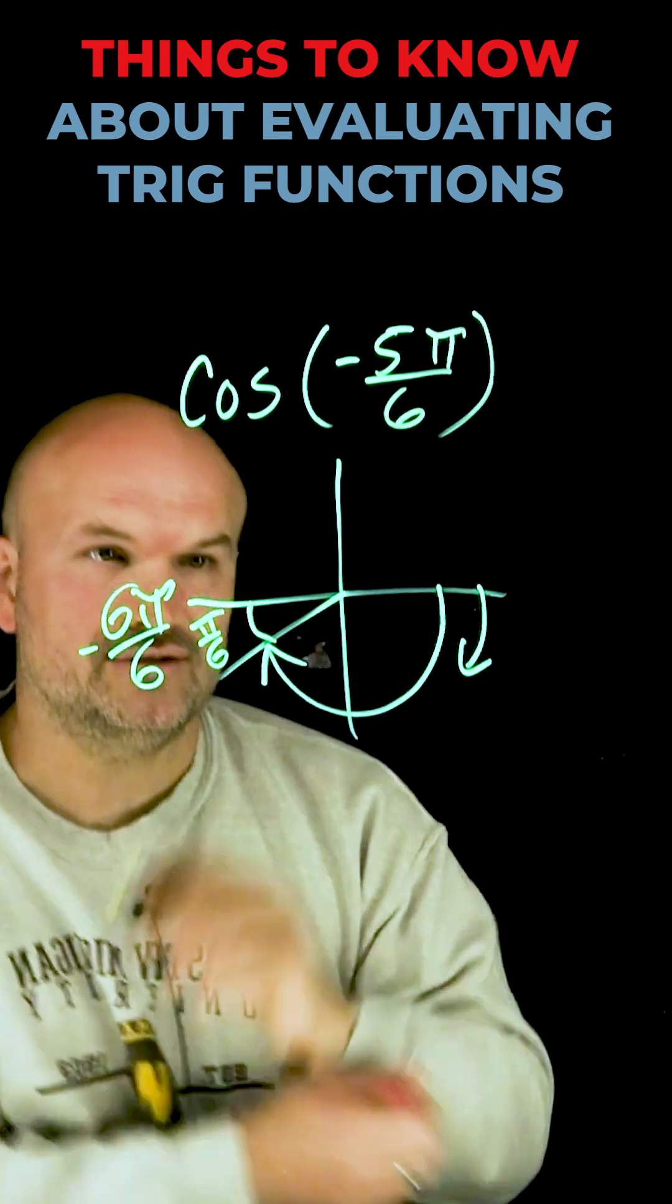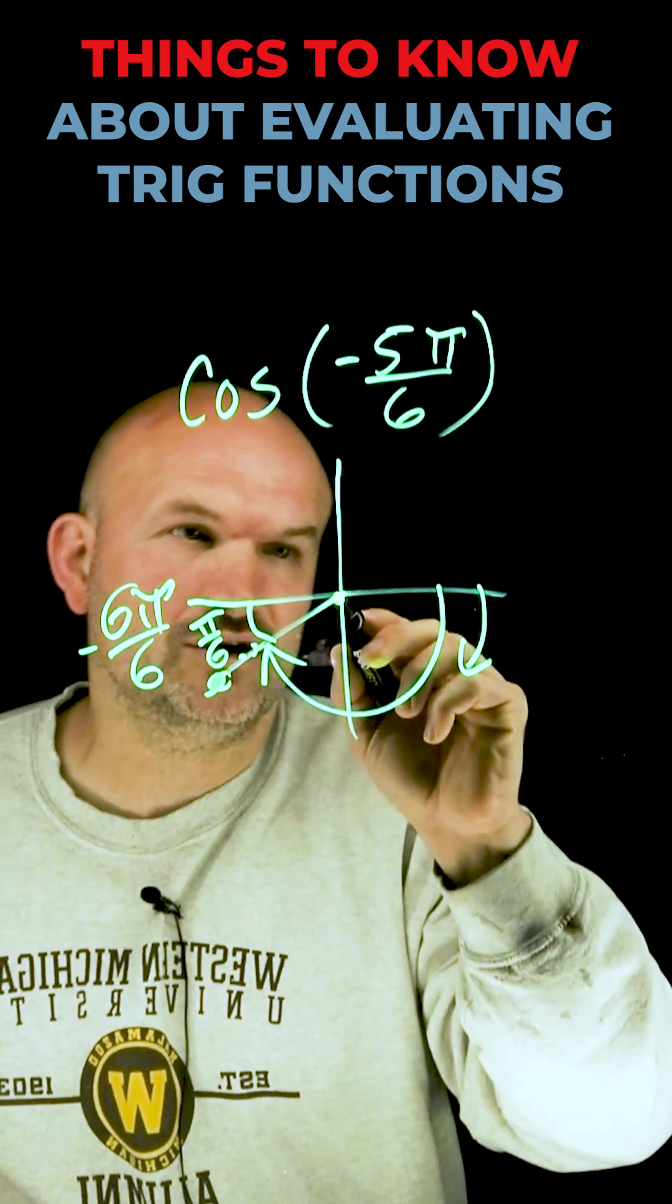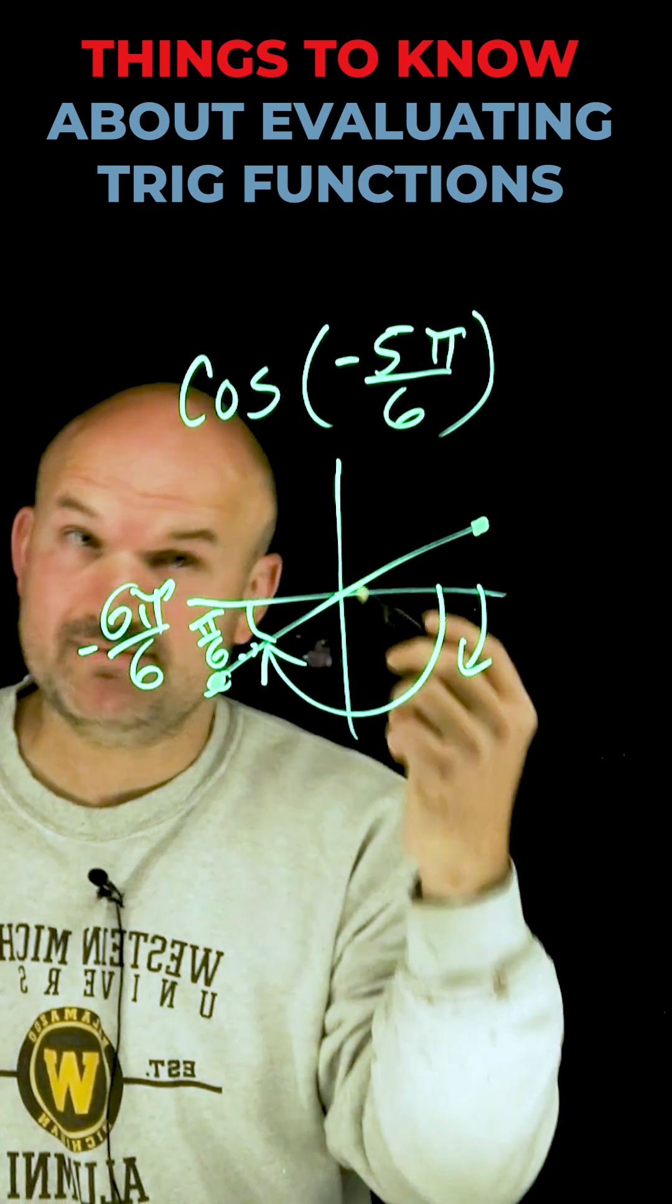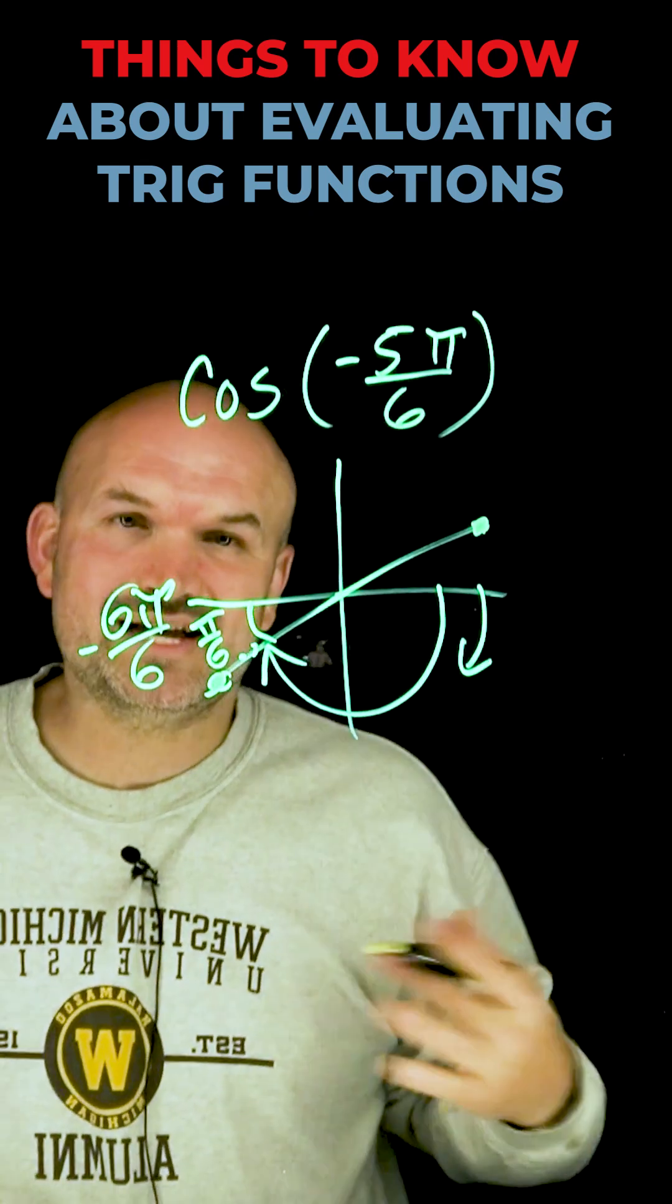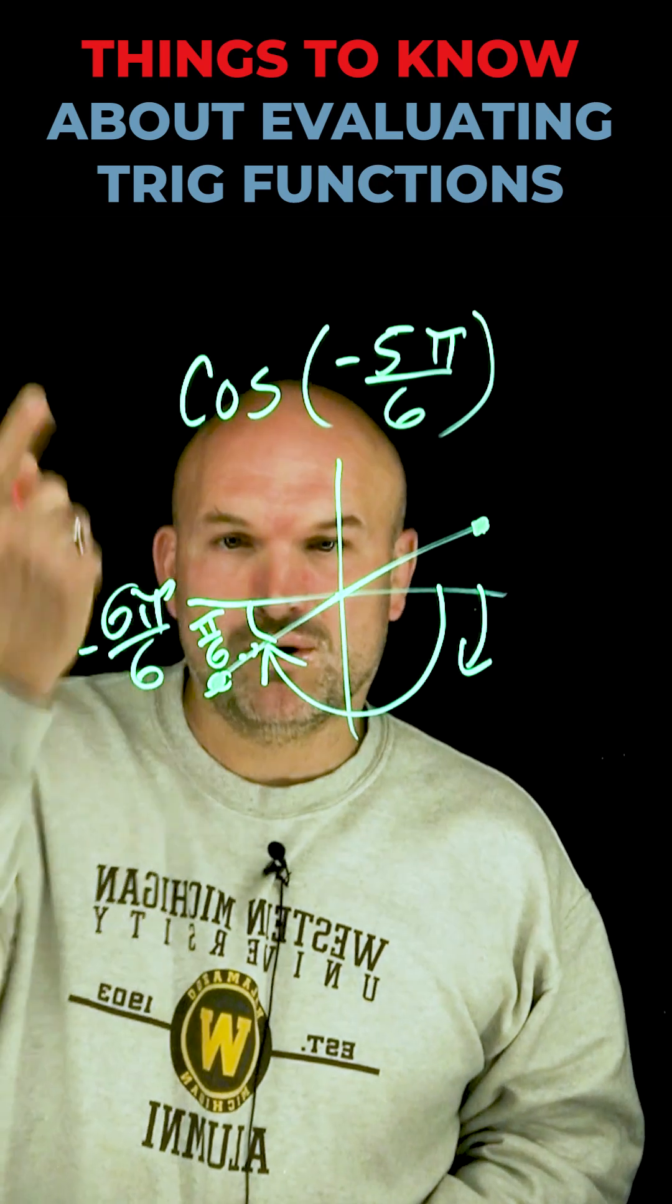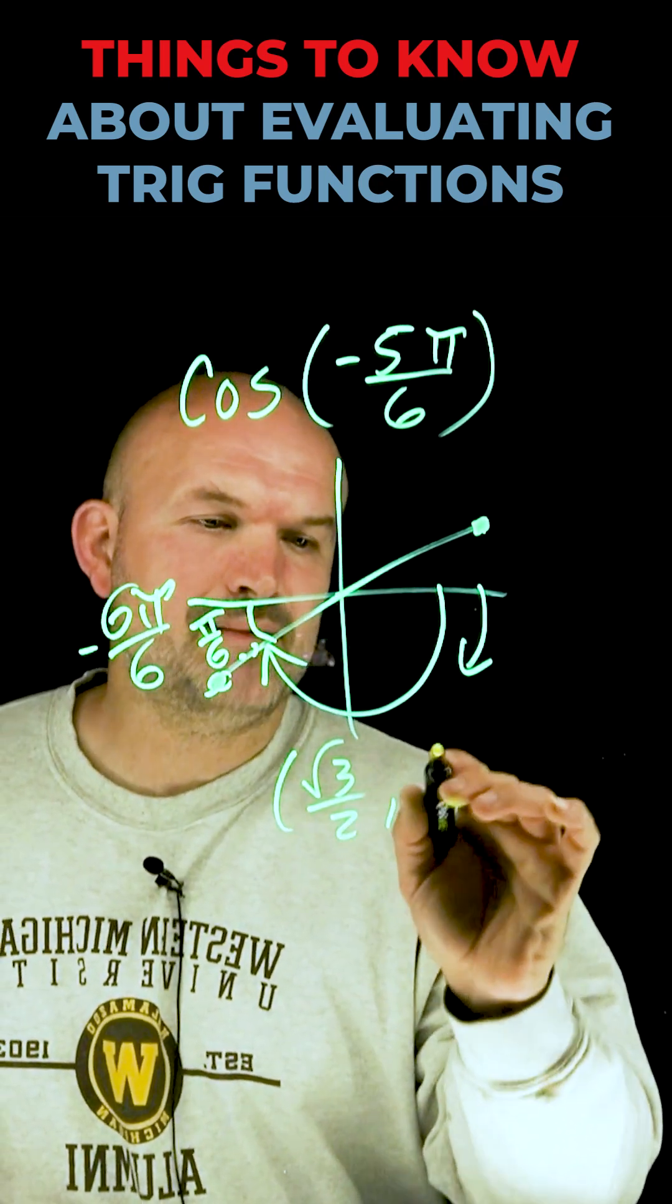That is what we call the reference angle. The reason that's important is because this coordinate point on the unit circle has the same coordinate points as π over 6, my reference angle, from the first quadrant. So now I just need to know what is that coordinate point in the first quadrant for π over 6. Well, that is going to be square root of 3 over 2 comma 1 half.